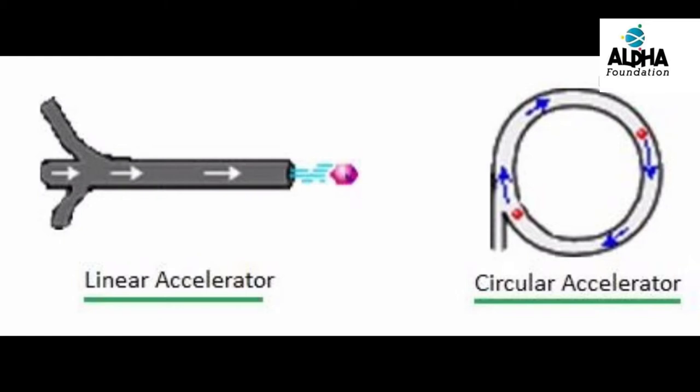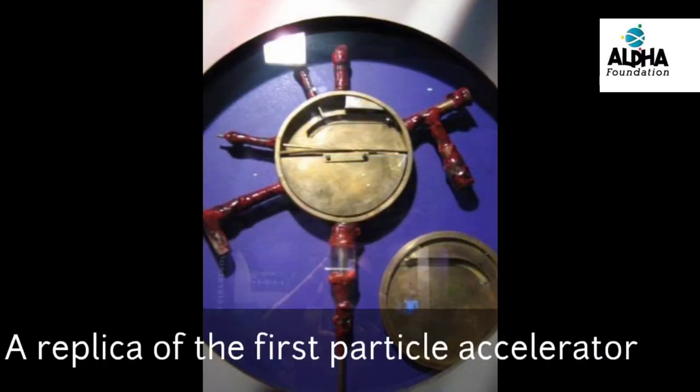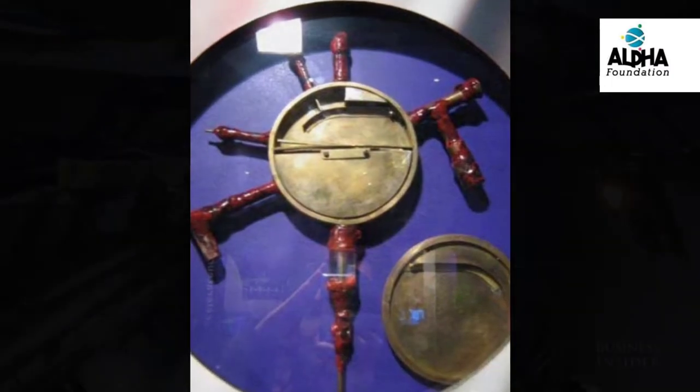The very first particle accelerator was built in 1930 by Ernest Lawrence in the University of California. It accelerated hydrogen ions up to energies of 80,000 electron volts within a chamber less than inches across. Since then technology has really gone a long way, creating particle accelerators with brighter beams of particles with greater energies than previously imagined.